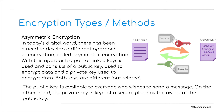The other method, perhaps a more secure method, is something called asymmetric encryption. In today's digital world, there has been a need to develop a different approach to encryption, something more secure. With this approach, a pair of linked keys is used and consists of a public key used to encrypt the data, and a private key used to decrypt the data. Both keys are different but they're related. The public key is available to anyone who wishes to send a message. The private key is kept in a secure place by the owner of the public key, and only that person with the private key can decrypt the message.